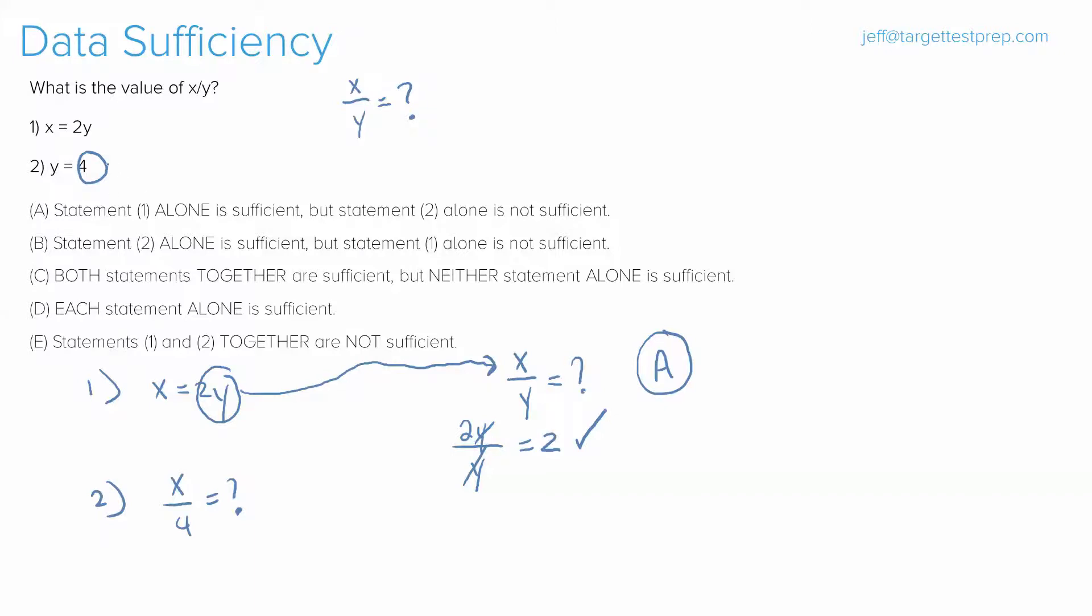I can take 4, I can plug it in for y, and then I can say that x is 8, and of course, y is 4. Well, here's the problem with that. The problem with that is that that's too easy. It's just too easy, and the GMAT, as we know, is never going to test us or allow us to guess that easy.